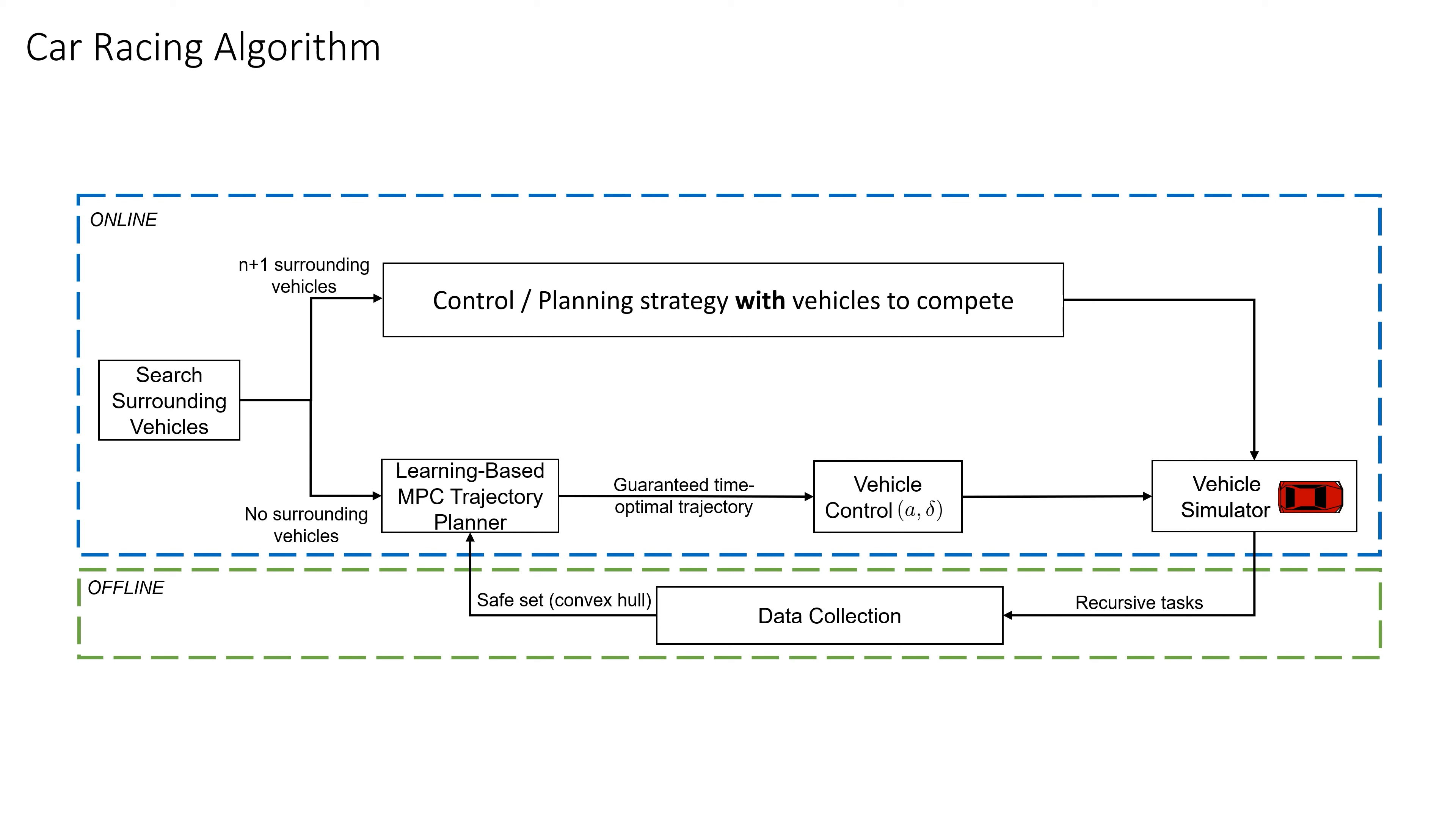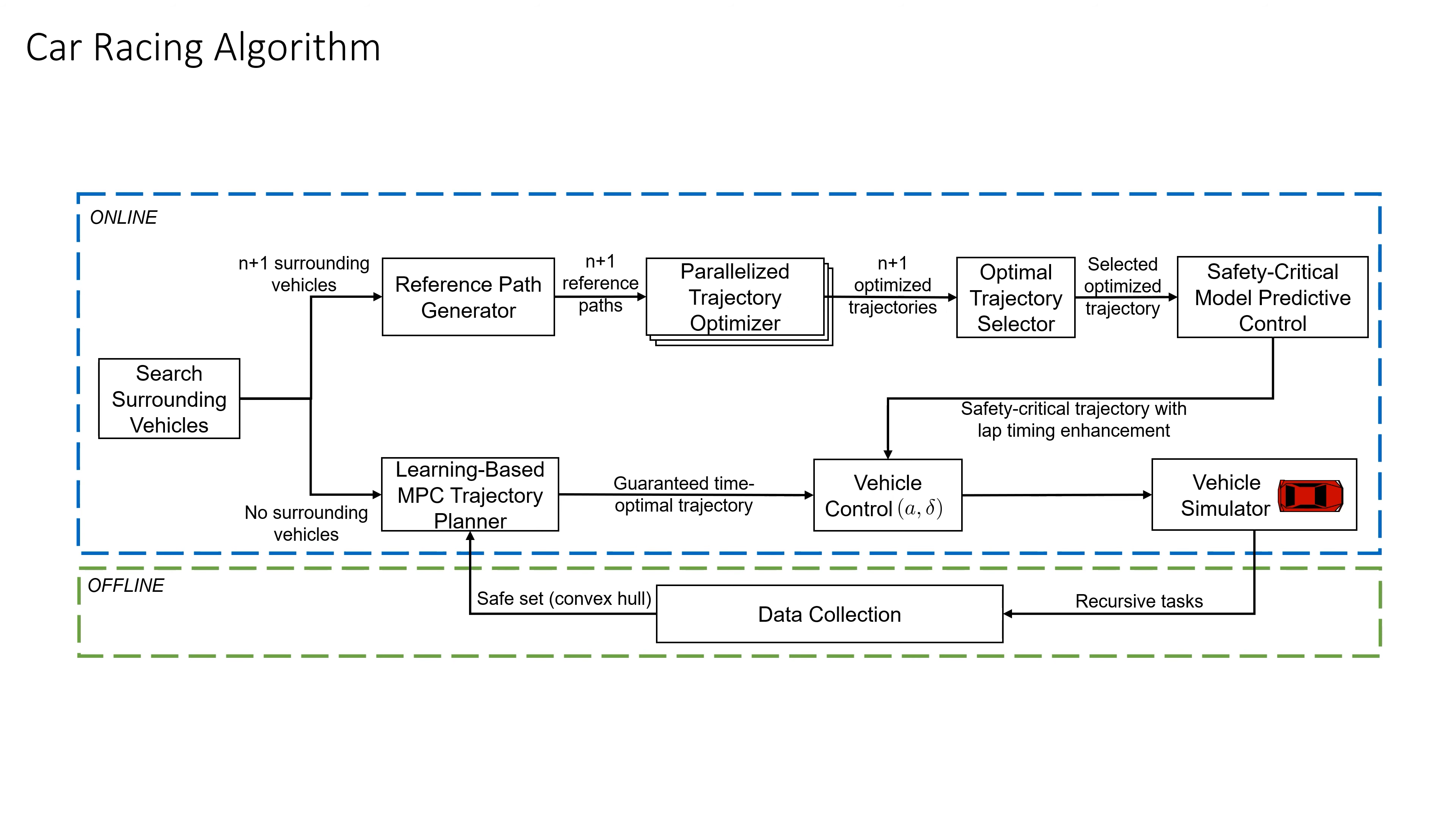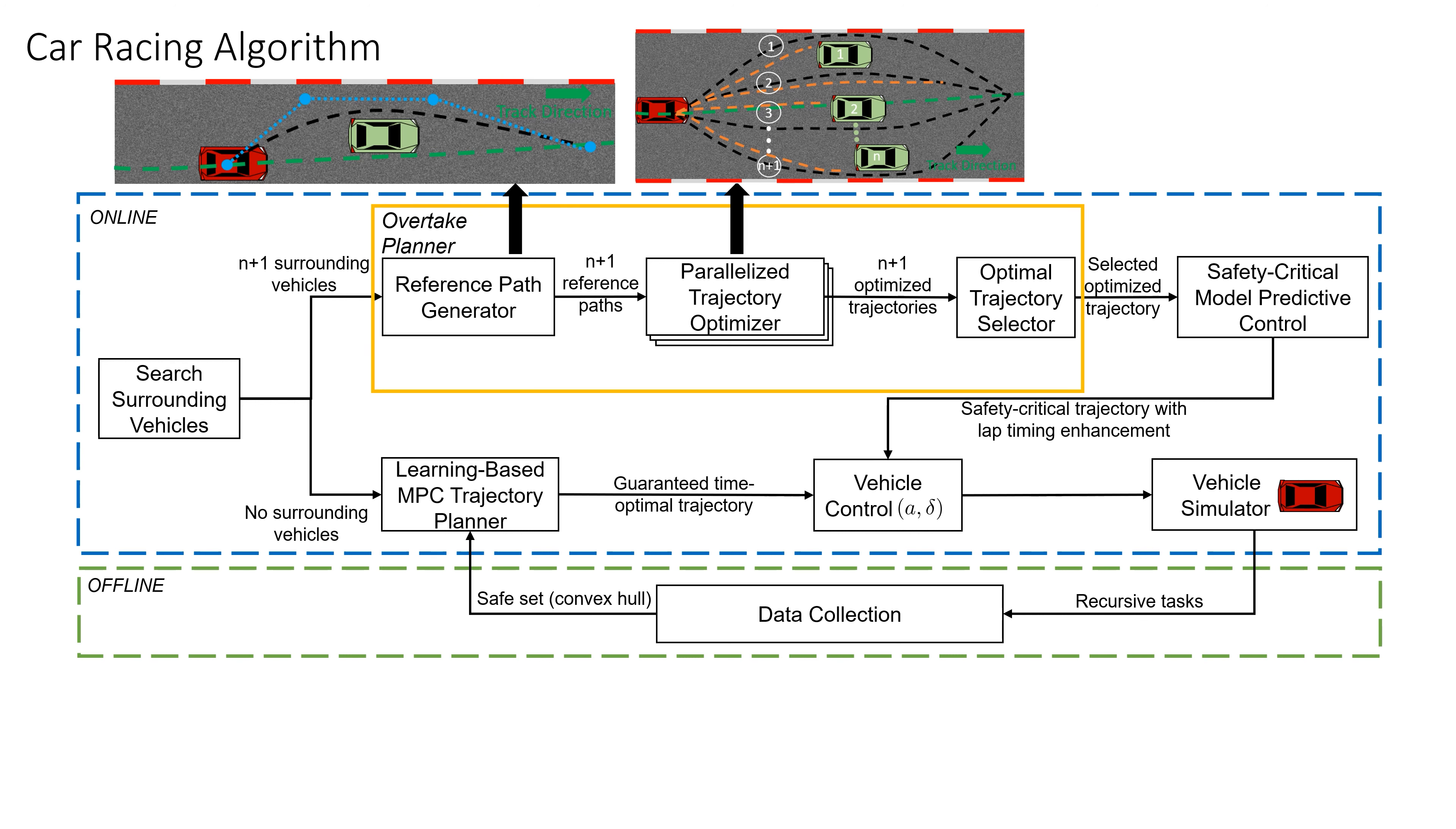This learning-based MPC is achieved with offline calculation. When the ego vehicle is competing with other surrounding vehicles to overtake, an optimization-based planner generates multiple dynamic feasible trajectories through parallel computation.